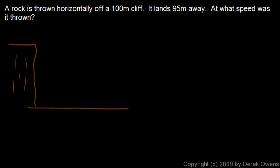A rock is thrown horizontally off of a 100 meter cliff. So let's draw this. Here goes the rock. Its initial velocity is horizontal, and we're told that the cliff is 100 meters high. And it lands 95 meters away. The path here is a piece of a parabola, and that distance is 95 meters. At what speed was it thrown? So this is what we're looking for, the initial velocity.